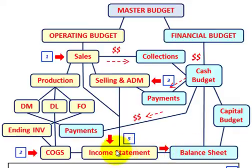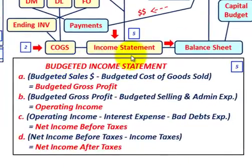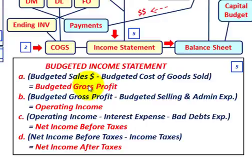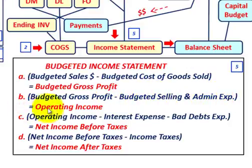Let's go over the basics of building the income statement budget. First, you start with your budgeted sales and subtract your budgeted cost of goods sold to get your budgeted gross profit. Then, in step B, you subtract the budgeted selling and administration expenses from gross profit, which gives you your operating income.